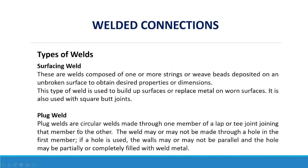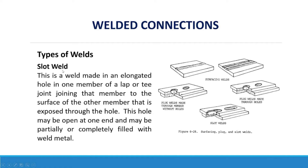Plug welds are circular welds made through one member of a lap or T-joint, joining that member to the other. The weld may or may not be made through a hole in the first member. If a hole is used, the walls may or may not be parallel, and the hole may be partially or completely filled with weld metal. A slot weld is a weld made in an elongated hole in one member of a lap or T-joint, joining that member to the surface of the other member exposed through the hole. This hole may be open at one end and may be partially or completely filled with weld metal.